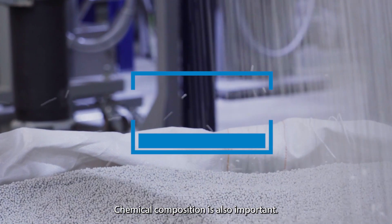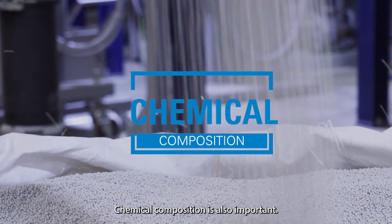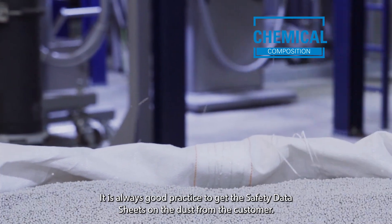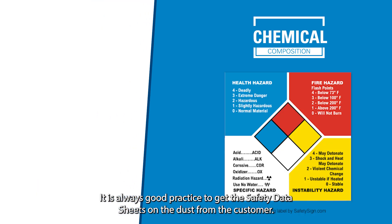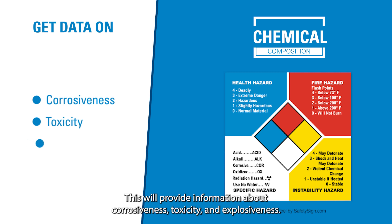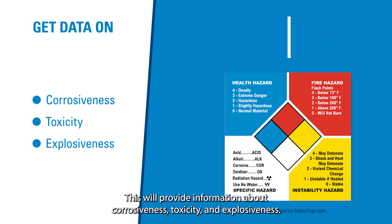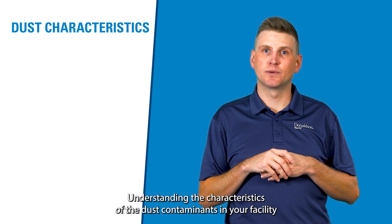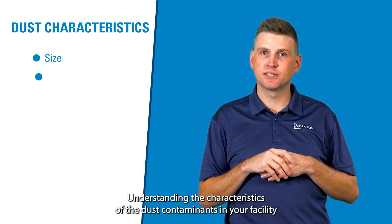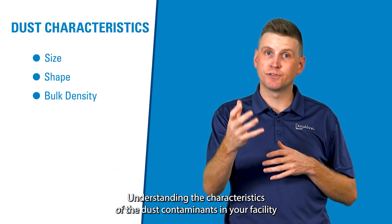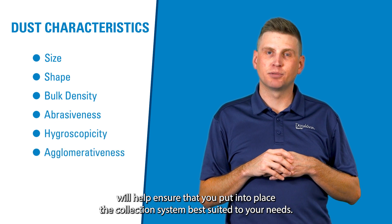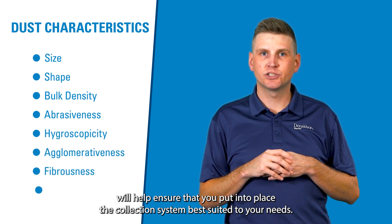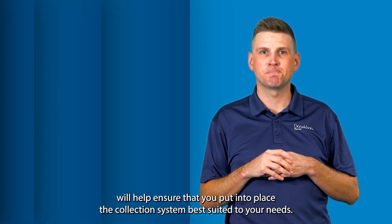Chemical composition is also important. It is always good practice to get the safety data sheets on the dust from the customer. This will provide information about corrosiveness, toxicity, and explosiveness. Understanding the characteristics of the dust contaminants in your facility will help ensure you put into place the collection system best suited to your needs.